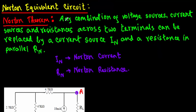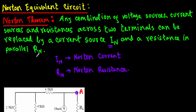After discussing the Thevenin equivalent circuit, I will introduce another type of circuit known as the Norton equivalent circuit. Norton theorem states that any combination of voltage sources, current sources and resistances across two terminals can be replaced by a single current source IN and a single resistance RN in parallel. Here IN is known as Norton current and RN is known as Norton resistance.